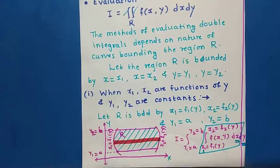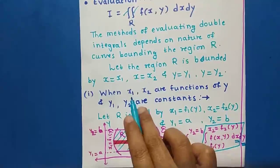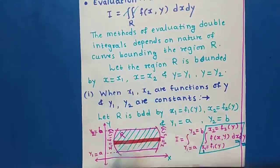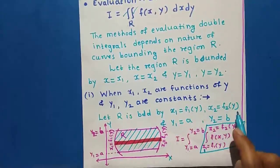If the limits of y are functions of x, then we take a strip parallel to the y-axis, which is a vertical strip. In this first case, since the limits of x are functions of y, we take a strip parallel to the x-axis — that means we take a horizontal strip in region R.